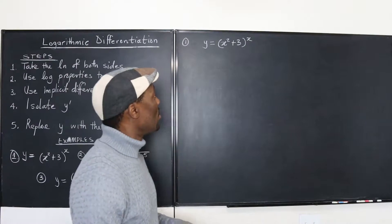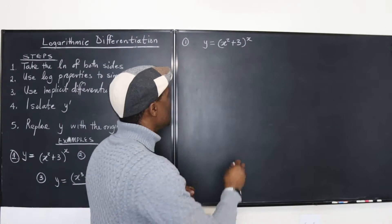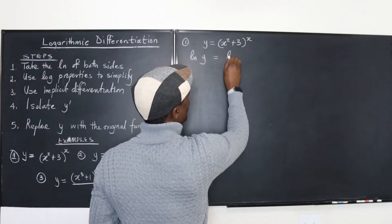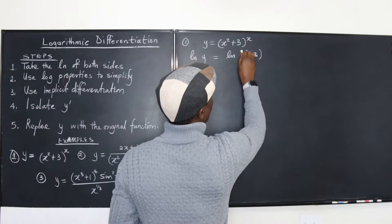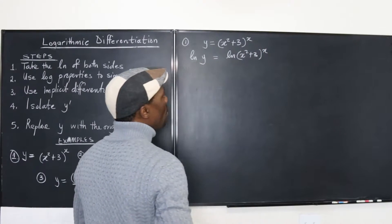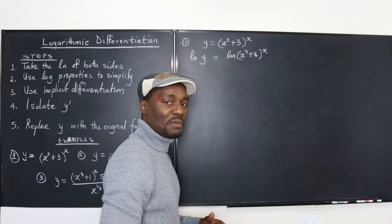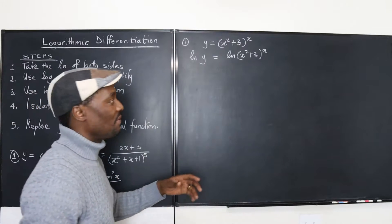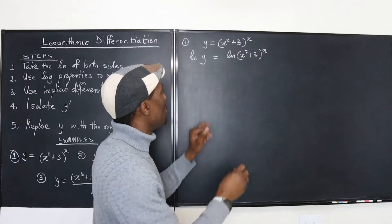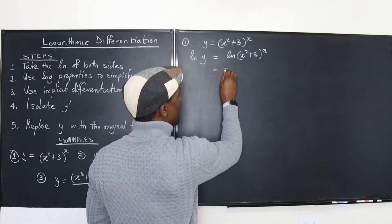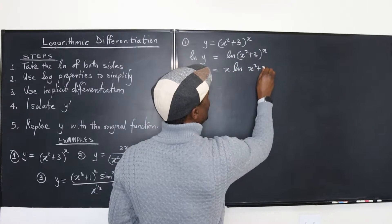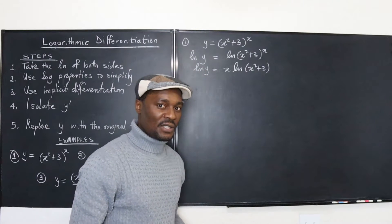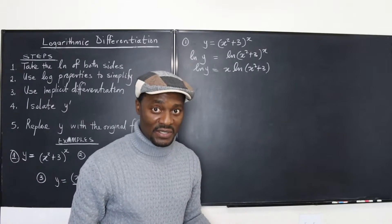The first question is on the board. Since the exponent is not a constant, I'm going to take the natural log of both sides. Natural log of y is equal to the natural log of x squared plus 3 to the x. I can bring the exponent down — that's what you mean by properties of logarithms. That power comes all the way down, and you get x times ln of x squared plus 3. That's what we have here as ln y.